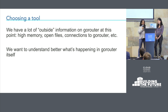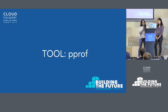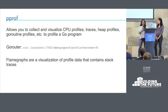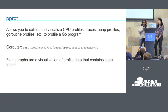We need to dig into the 404s and see how GoRouter itself is dealing with them. To help us do this, we can profile the code. A good tool for doing that is PPROF. PPROF allows you to collect and visualize CPU profiles, traces, heap profiles, GoRoutine profiles, and other things to profile a Go program. GoRouter has a PPROF endpoint for collecting profile and trace data. Flame graphs are a way to visualize profile data that contains stack traces. We'll look at a flame graph of profile data of the GoRouter while the problem's occurring.